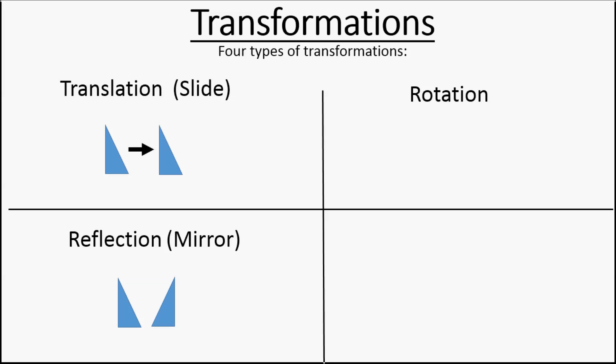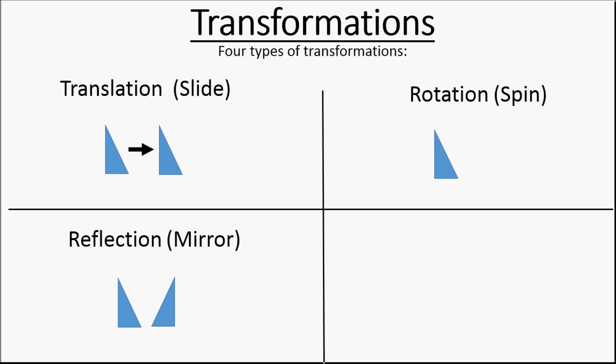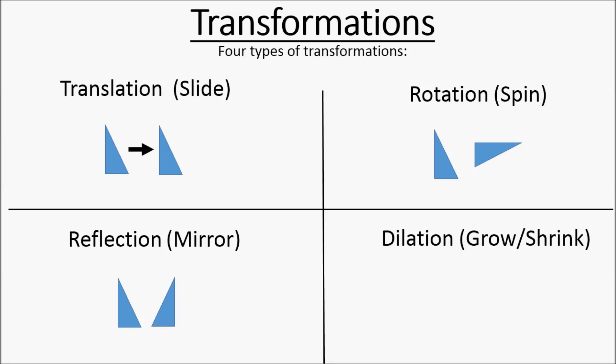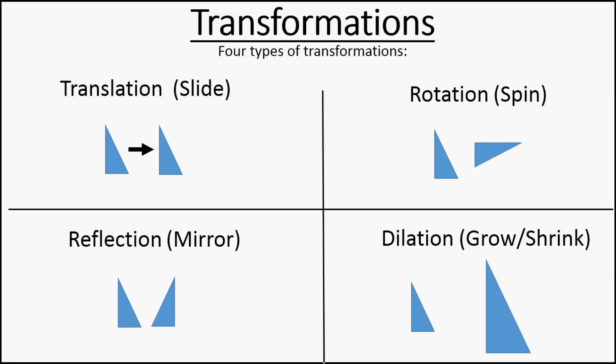Then we're going to have rotations, and that is when you spin a shape, so now the shape is going to be pointing in different directions. And then finally you have dilations. Dilations are when something grows or shrinks. You've got a shape, and then you've got the same shape but a larger version of it. These two shapes are similar figures, so keep that in mind.